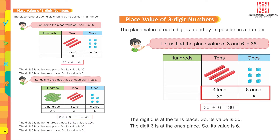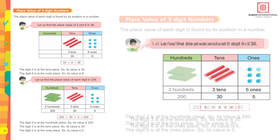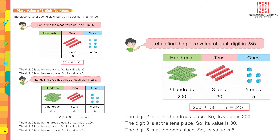3 tens and 6 ones. 3 tens equals 30, 6 ones equals 6. 30 plus 6 equals 36. Now let us find the place value of each digit in 235.